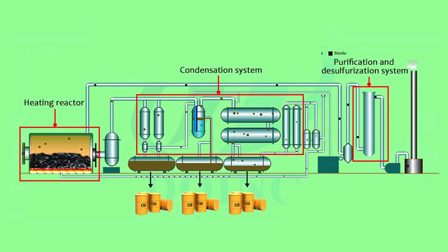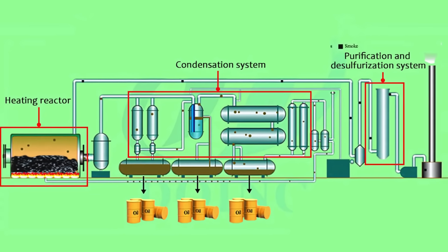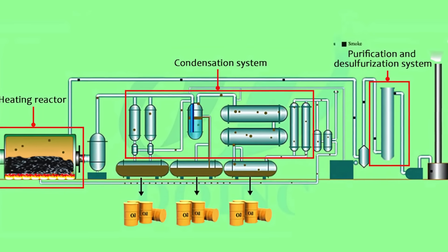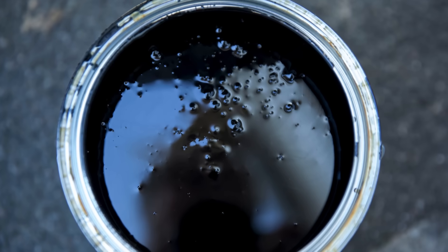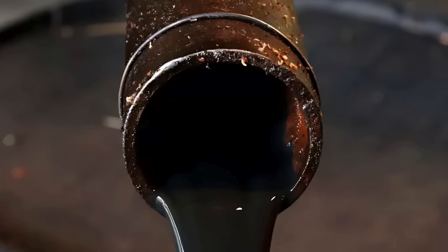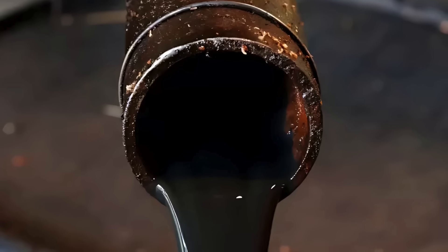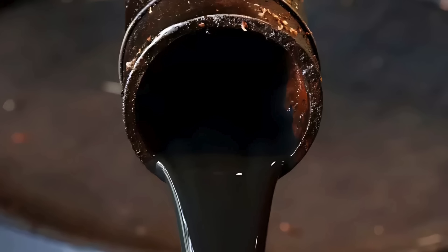This process is known as pyrolysis, which is the thermal decomposition of organic material in the absence of oxygen. By heating materials like coal or wood in a controlled environment, volatile compounds are released, leaving behind tar and other byproducts. The end result is a viscous liquid that can be processed further to meet specific industrial needs.